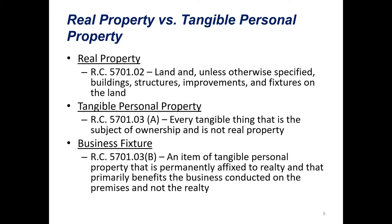Real property is defined in Revised Code 5701-02 as land and, unless otherwise specified, buildings, structures, improvements, and fixtures on the land. I want to point out that language 'otherwise specified'—that's going to be really important and we'll talk about that in more detail later.